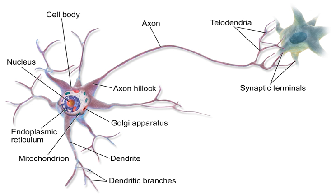Neurons are highly specialized for the processing and transmission of cellular signals. Given their diversity of functions performed in different parts of the nervous system, there is a wide variety in their shape, size, and electrochemical properties. For instance, the soma of a neuron can vary from 4 to 100 micrometers in diameter. The soma contains the nucleus, where most protein synthesis occurs. The nucleus can range from 3 to 18 micrometers in diameter.